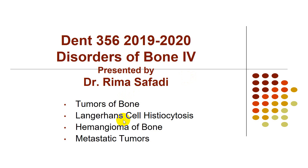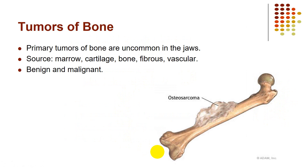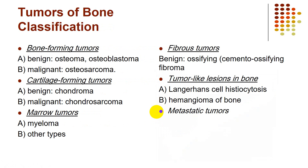The primary bone tumors are uncommon in the jaws. The secondary bone tumors include those metastasizing to the bone. Primary tumors originate from the bone itself — from the marrow, cartilage, bone, fibrous tissue, and vascular elements present within the marrow. These tumors can be benign and malignant. They are classified according to the tissue of origin: bone-forming, cartilage-forming, marrow tumors, fibrous tumors, and tumor-like lesions in bone.